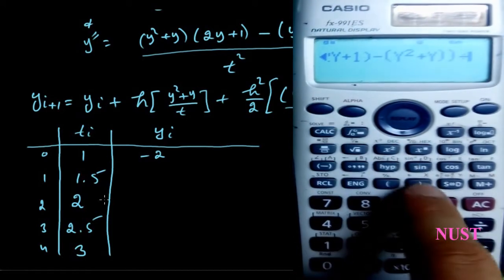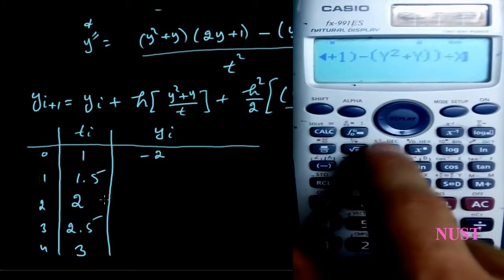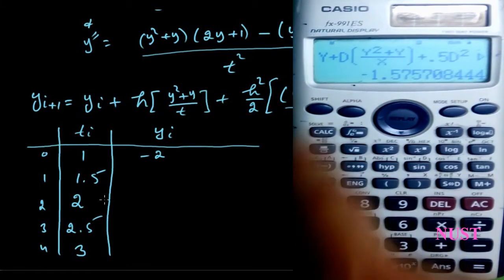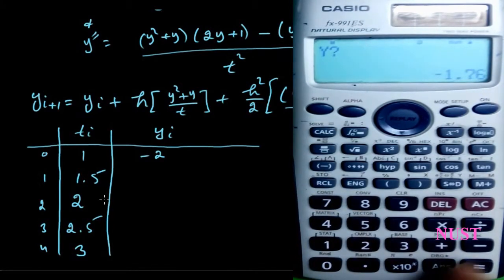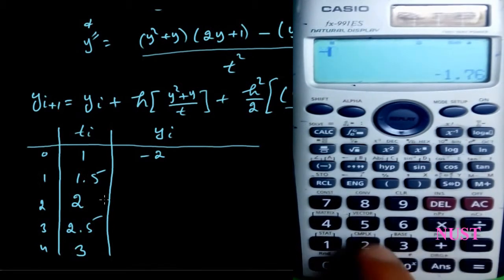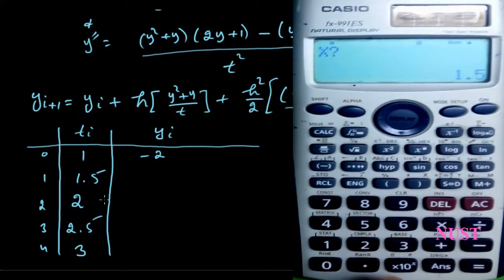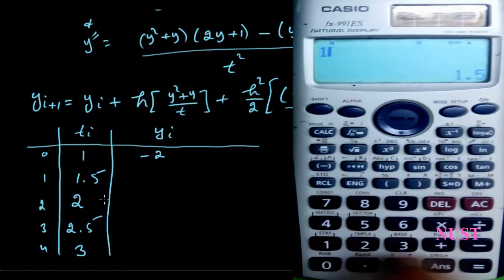Once you are done, press the CLC button. Enter the initial given value of the function which is minus 2. For d enter 0.5 and for x enter 1.